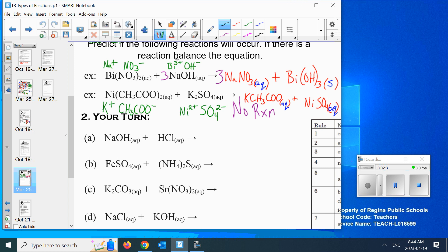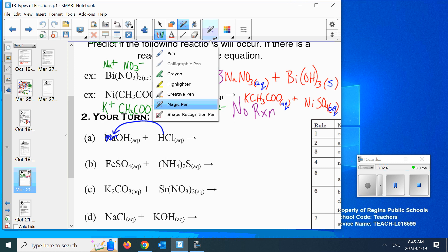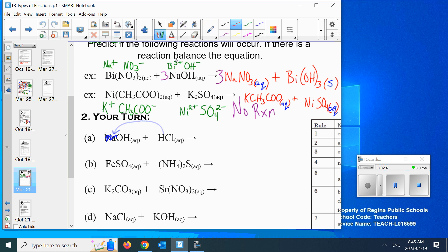Then we went to predicting, and this is where we left off, and we were going to write down some answers. What am I doing here for the first one? Na and H switch places.